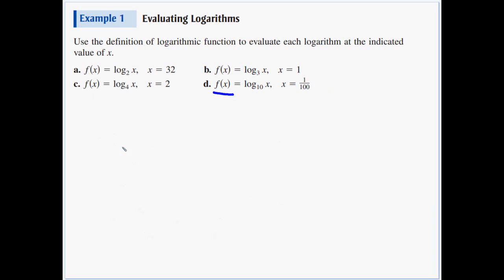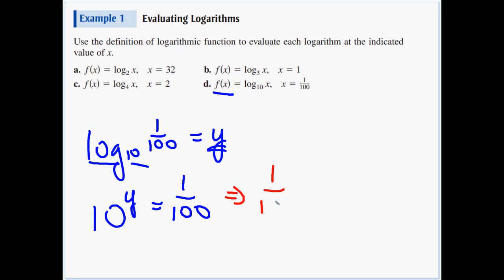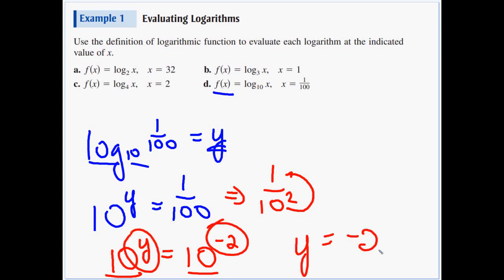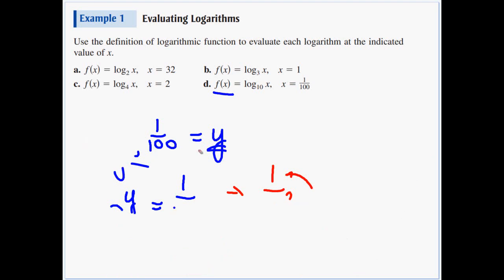Letter d: log base 10 of x when x is 1 over 100. So log base 10, 10 is our base, y is our exponent, and that's equal to 1 over 100. That 1 over 100 we could rewrite as 1 over 10 squared. When we bring that 10 squared up from the denominator, the exponent would change to a negative, 10 to the negative 2. Bases are the same, so y equals negative 2.